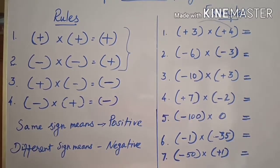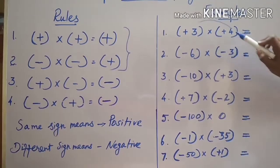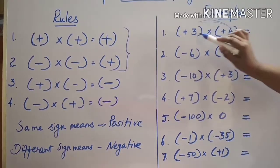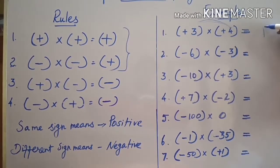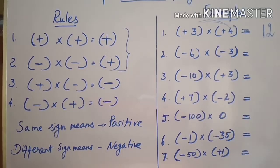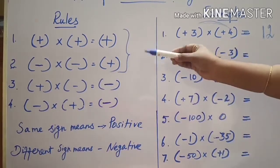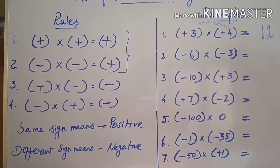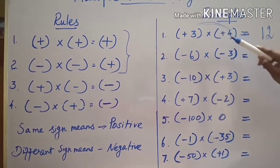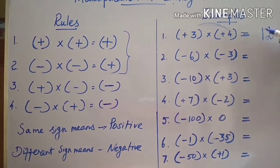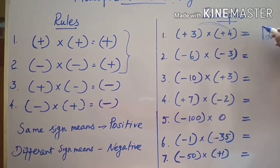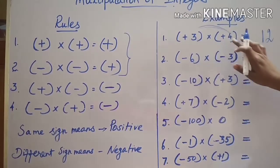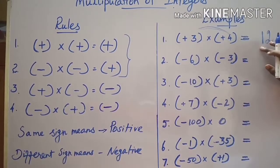Let me teach you some examples. First: three into four. Both integers are positive. Multiply the numbers: three times four is twelve. The rule states that if the signs of two integers are the same, the final answer will be positive. Both integers are positive, so the answer is also positive — plus twelve. No need to put the plus sign, just leave it.